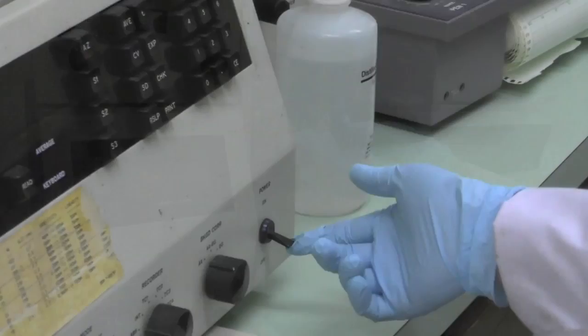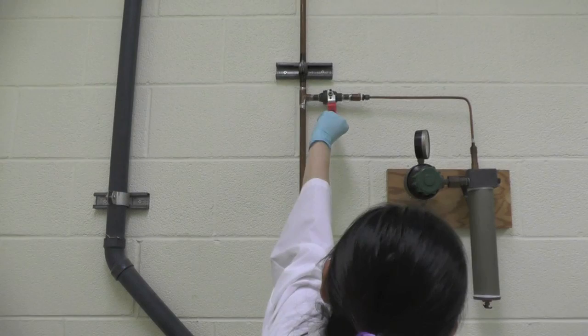Turn on power switch of the instrument. Then, turn on the acetylene gas tank. Next, turn on the air flow. Adjust the air flow and fuel to the appropriate level.